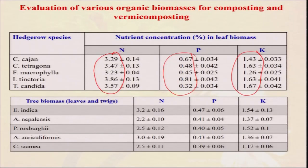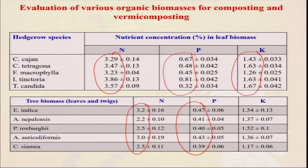We have worked out what different types of organic biomass are needed for composting and their nutrient content especially for nitrogen, phosphorus, and potassium. Species like Cassia tora, Cassia tetragona, Tephrosia indica, and T. candida contain more than 3 percent nitrogen, 0.8 to 3 percent phosphorus, and more than 1 percent potassium. We can compost these materials with the help of some waste decomposer, or use them along with cow dung in the process of vermicomposting. We can also use different types of tree biomass like Leucaena leucocephala, Sesbania roxburghii, and Cassia siamea, which contain about 2 to 3 percent nitrogen.